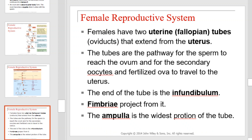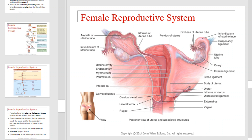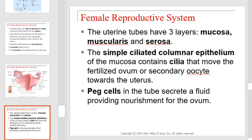Females have two uterine or fallopian tubes, also known as oviducts, that extend from the uterus. The tubes are the pathway for sperm to reach the ovum and for secondary oocytes and fertilized ova to travel to the uterus. The end of the tube is the infundibulum, and fimbriae project from it. The ampulla is the widest portion of the tube. The uterine tubes have three layers: mucosa, muscularis, and serosa. The simple ciliated columnar epithelium of the mucosa contains cilia that move the fertilized ovum towards the uterus. Peg cells in the tube secrete a fluid providing nourishment for the ovum.